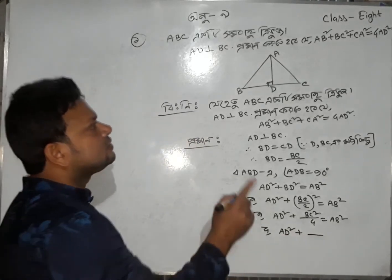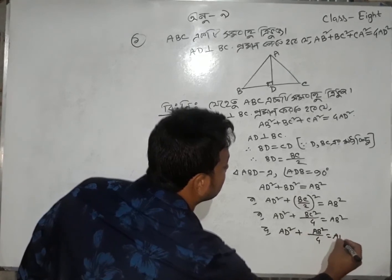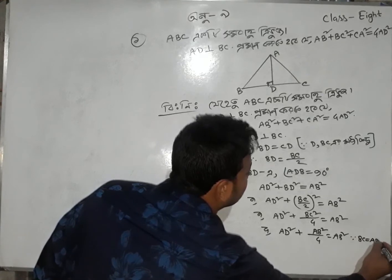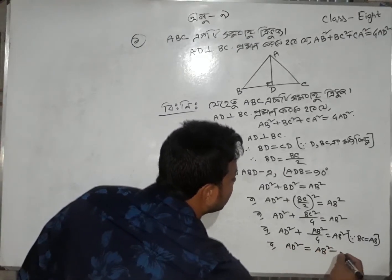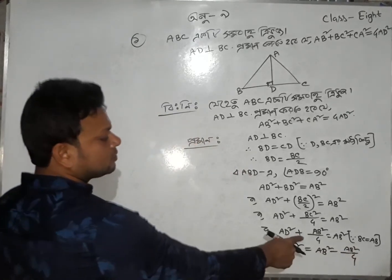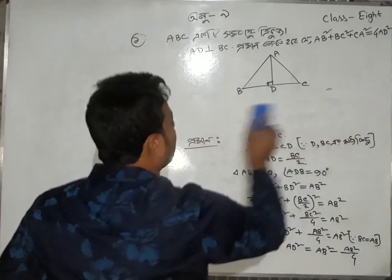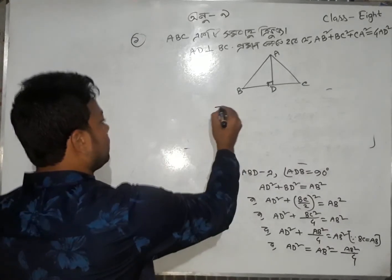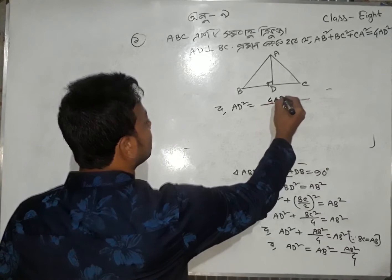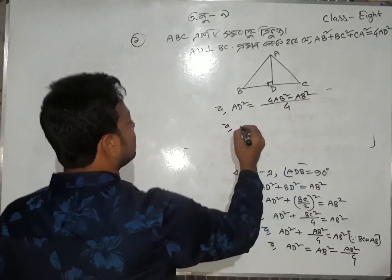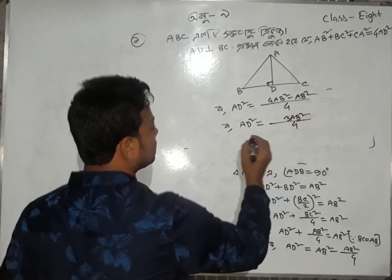Since AB, BC, CA are all equal to each other — that is, BC equals AB — we can write BC equal to AB. Therefore AD square equal to AB square minus AB square by 4. Taking common factor 4: 4AB square minus AB square equals 3AB square. So AD square equals 3AB square by 4.